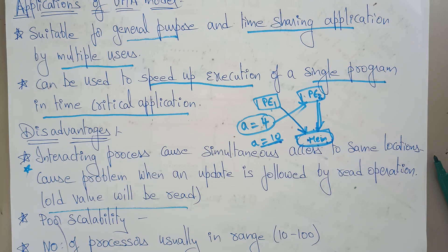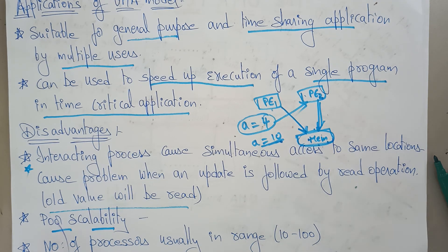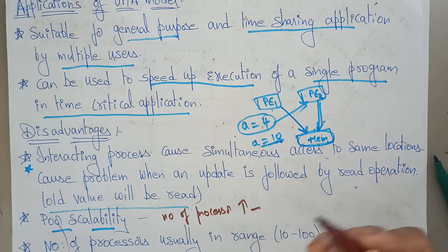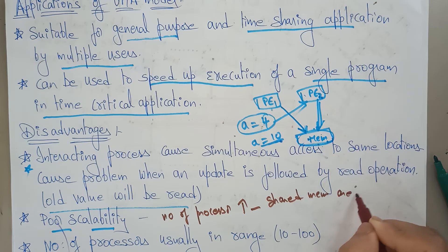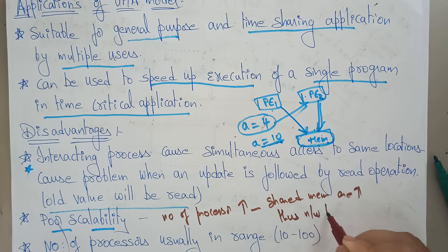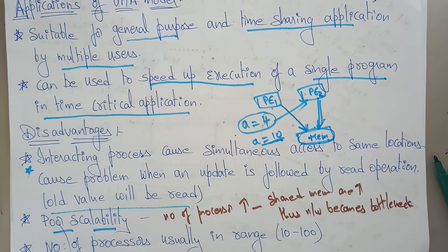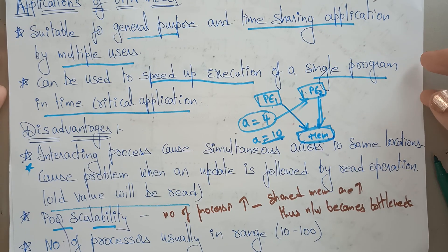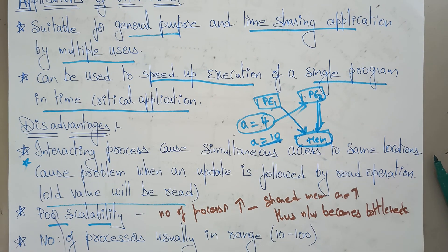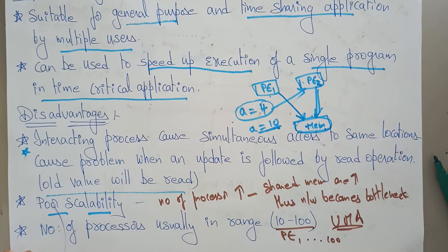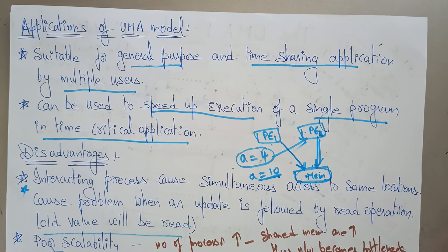Another disadvantage is poor scalability. If the number of processors increases, the shared memory area also increases, and thus the network becomes a bottleneck. Whenever the number of processors increases and shared memory area grows, there will be a bottleneck problem in the network connection between memory and processors. Also, in the UMA model, you can typically use only up to 100 processors maximum.